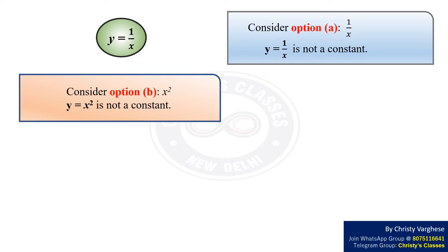In option B, the variable on the ordinate is x square. y equal to x square is not a constant, so we move to the next option.